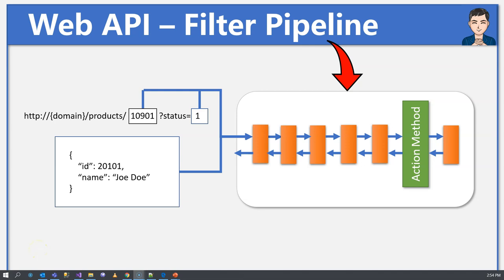Hello everyone. Today we're going to talk about the filter pipeline in Web API — what problems it's trying to resolve, why we need it, how we use it, and then let's see some examples of using it and some more details. All right, let's jump to the code and get started.